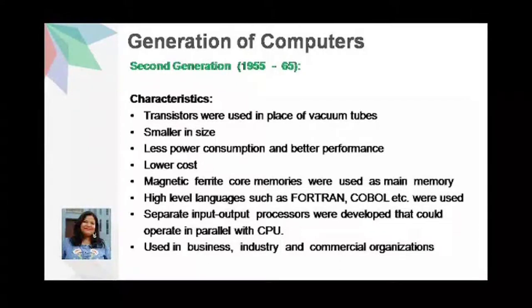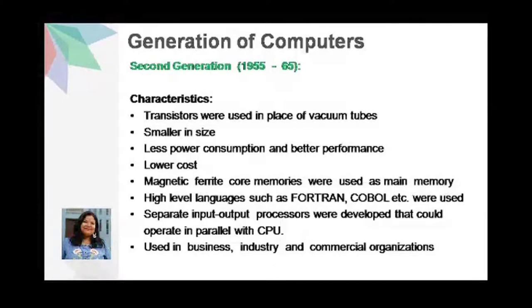Next we have the second generation of computers. The second generation lasted from 1955 to 1965. Some examples of computers in this generation are IBM 7030, Digital Equipment Corporation, PDP 158, and Honeywell 400.